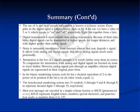In the binary numbering system, each bit has a decimal equivalent of 2 to the power of its position if the bit is on — in other words, equal to 1. This completes Module 2. Please review Quiz 2 and move on to Module 3.